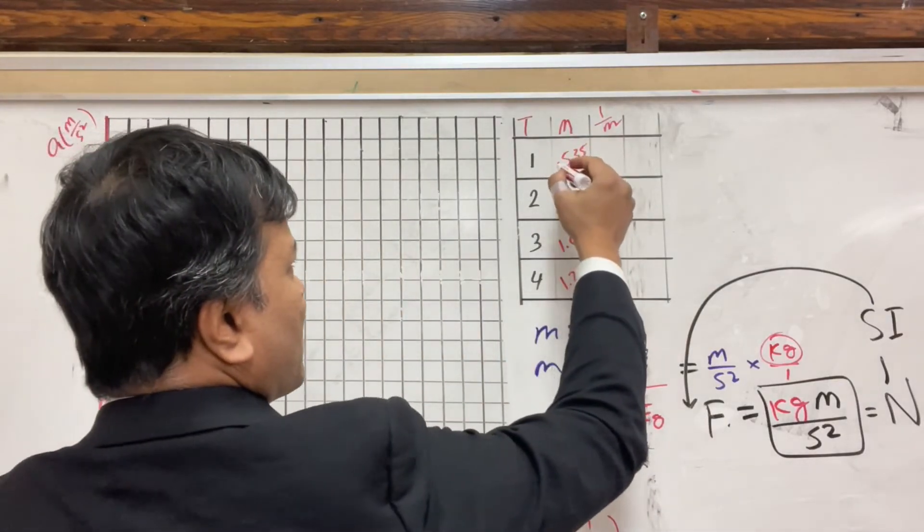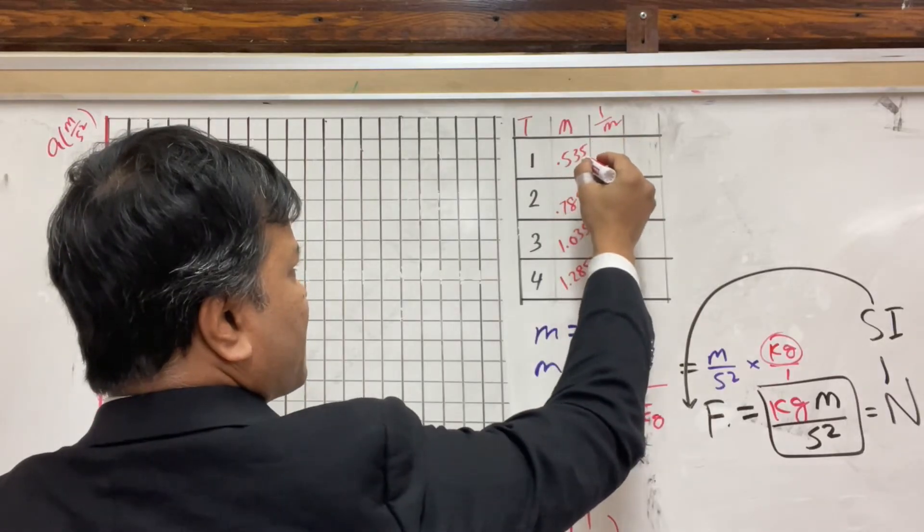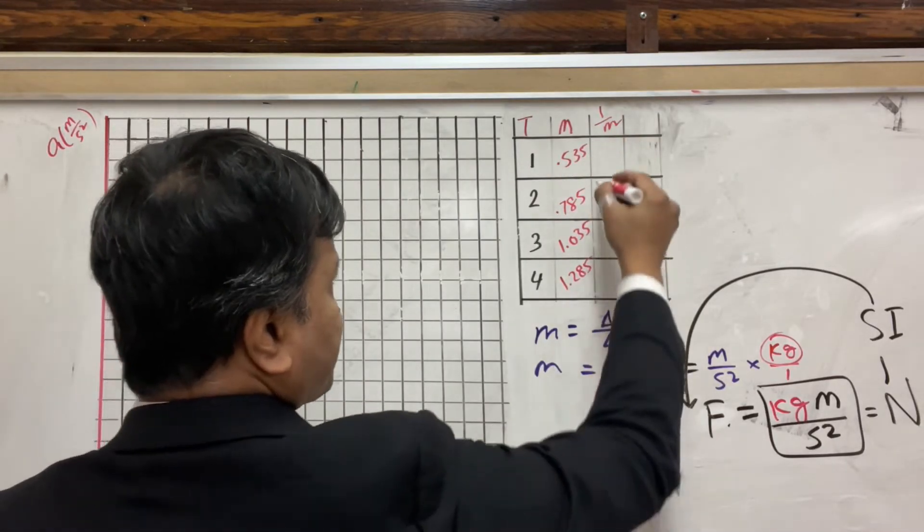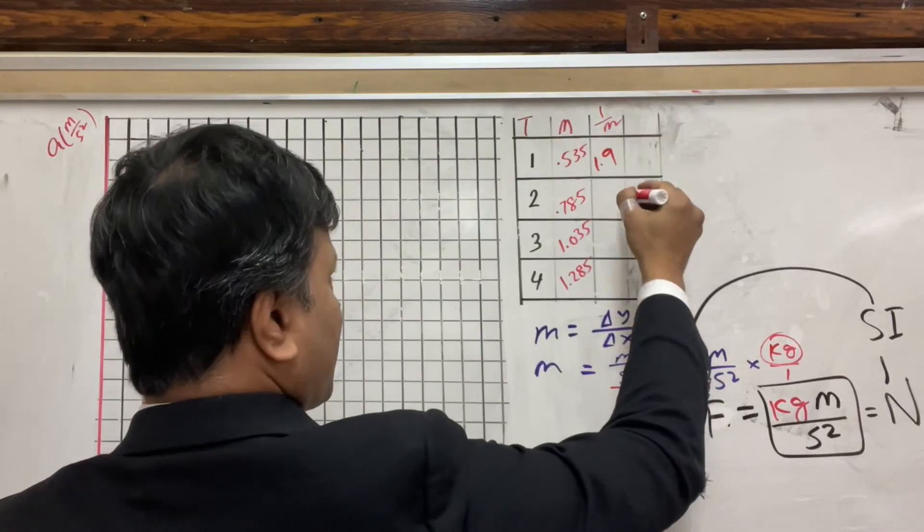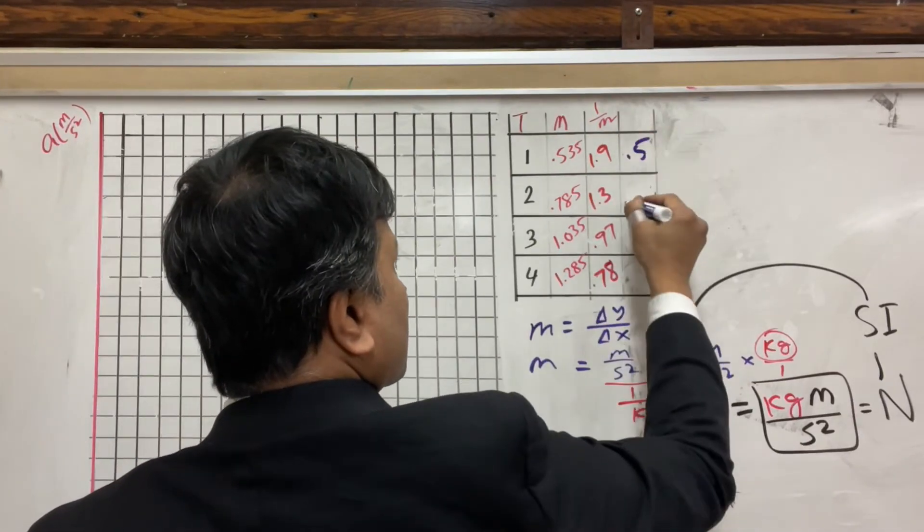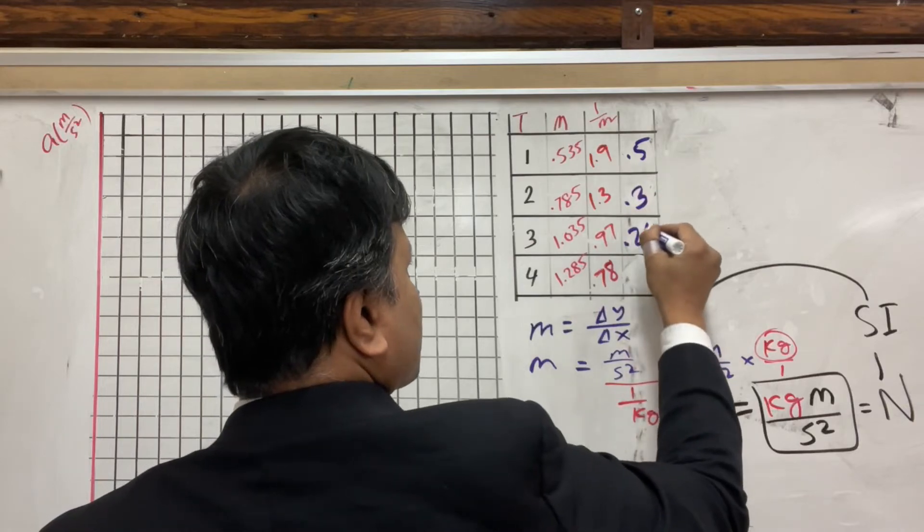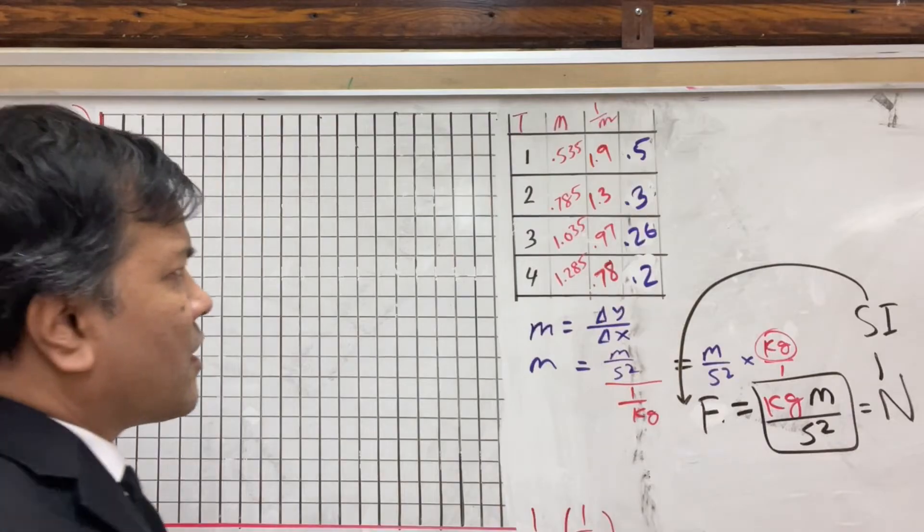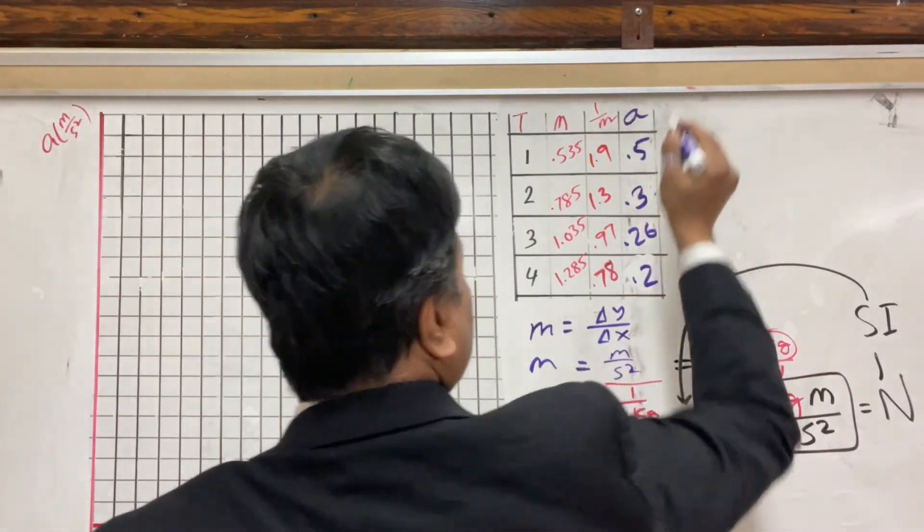Our slope, the name of our slope is force. So, 1 over mass, 1 over 0.535 is 1.9, and then 1.35, 0.3, 0.26, and 0.2. This is what we got from the lab.